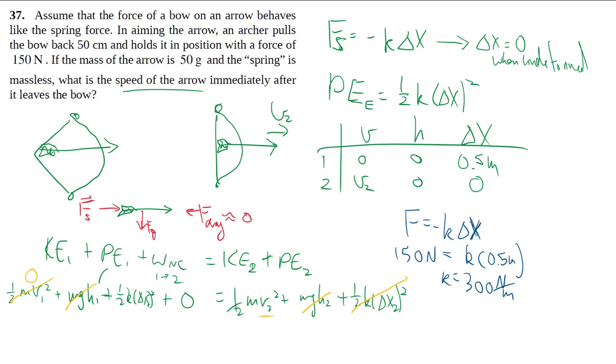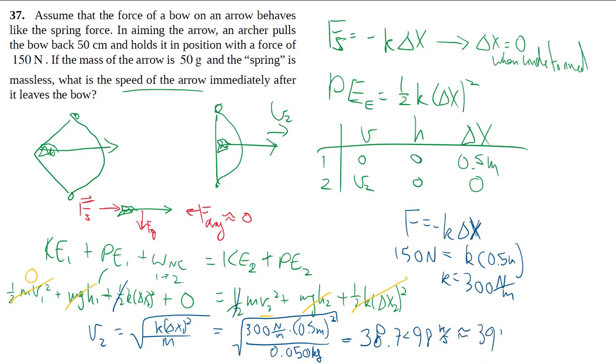So then we can sub that right in. So to solve for your v2, let's cancel out the one-half. Converting the kilograms, make sure our units work out right. This gives us the speed of the arrow is 39 meters per second.